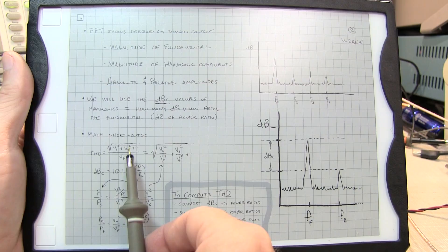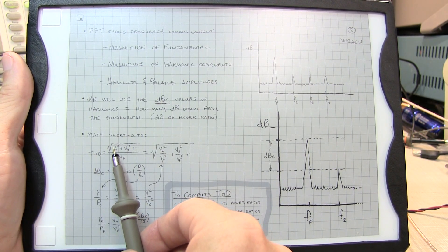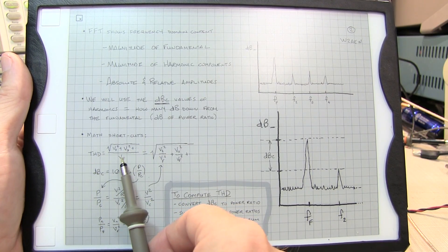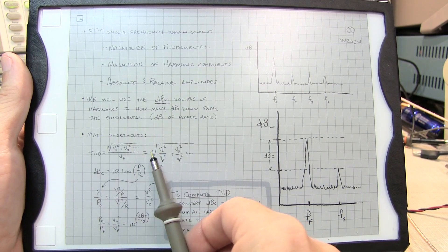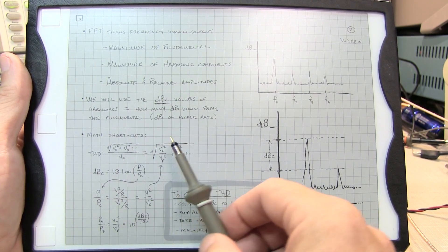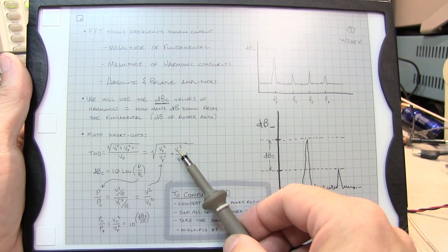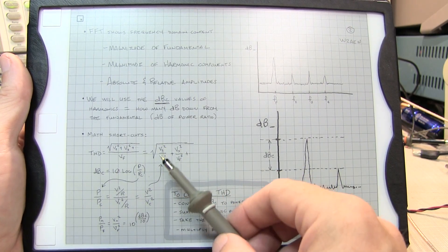If we take a closer look at the THD equation, again we've got the RMS sum of the harmonic RMS voltages divided by the RMS voltage of the fundamental. That could be expanded out to be the square root of the entire quantity of the second harmonic with respect to the fundamental, the third harmonic with respect to the fundamental. So you do this all individually, V squared over V squared.